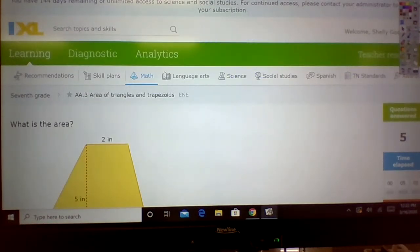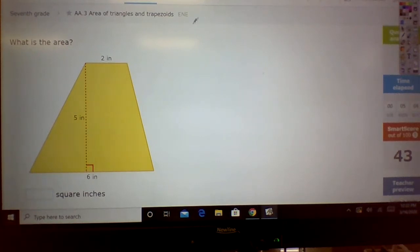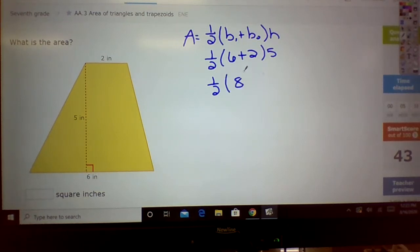Alright, let's try it again. Always write the formula. A equals one-half B1 plus B2 times H. One-half B1, 6 plus 2 times 5. One-half, 6 plus 2 is 8. 4 times 5 is 20.